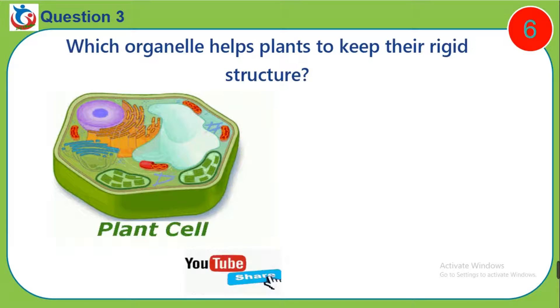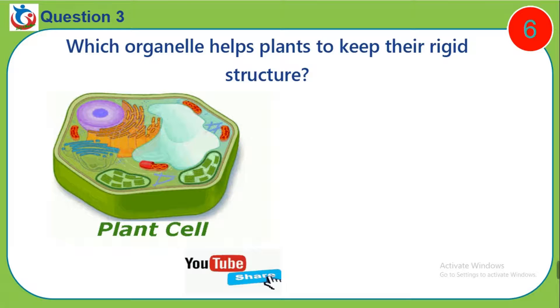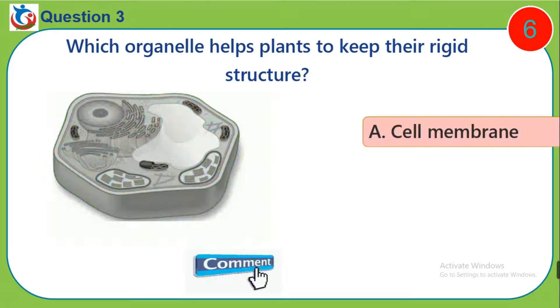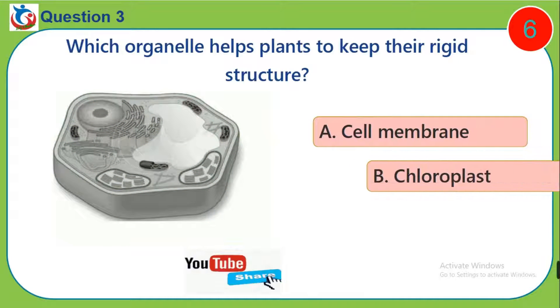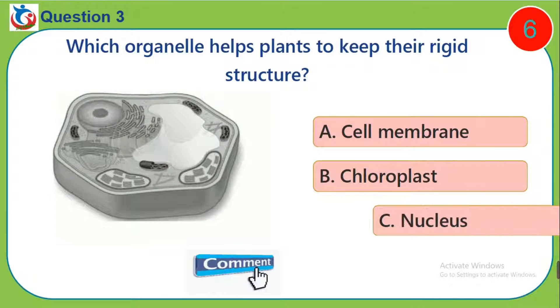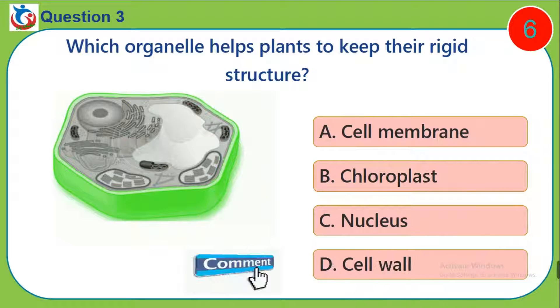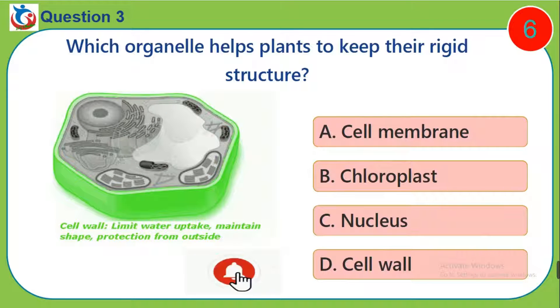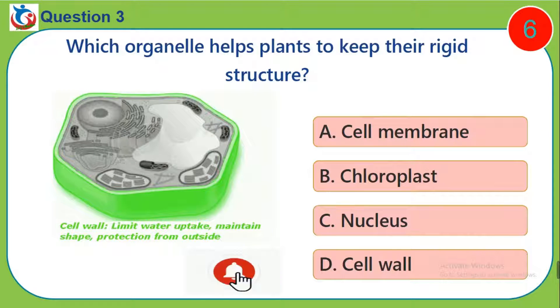Question 3. Which organelle helps plants to keep their original structure? A. Cell membrane. B. Chloroplast. C. Nucleus. D. Cell wall.